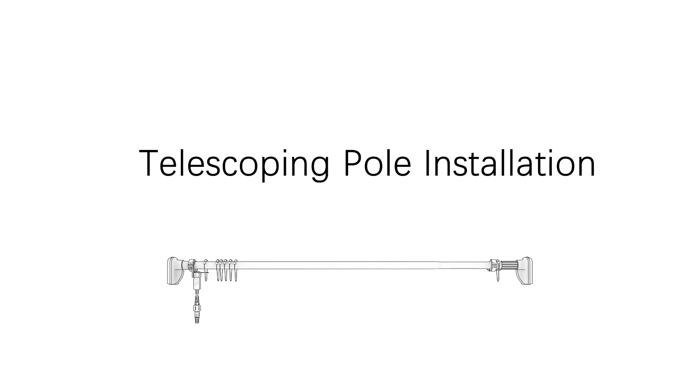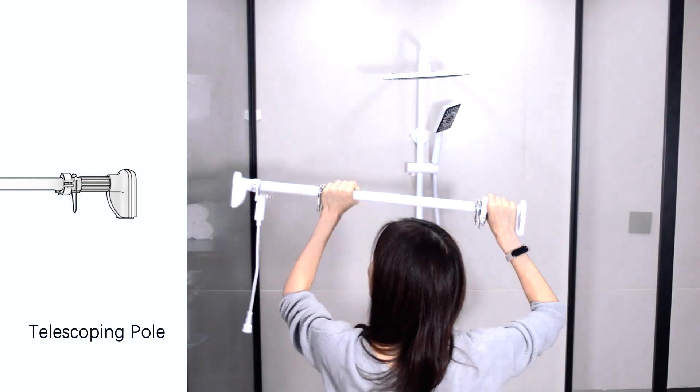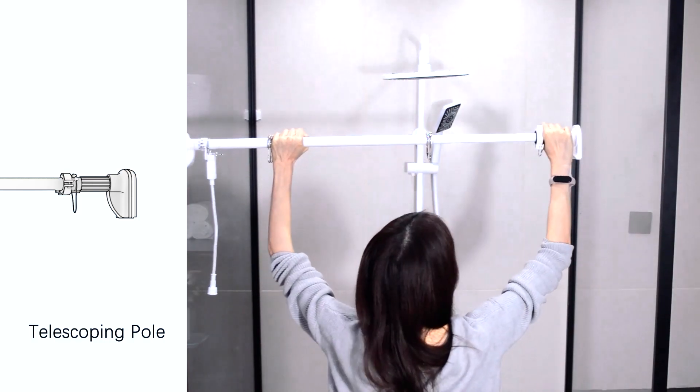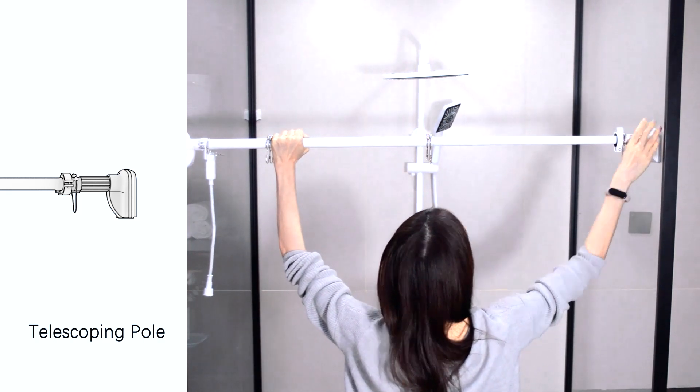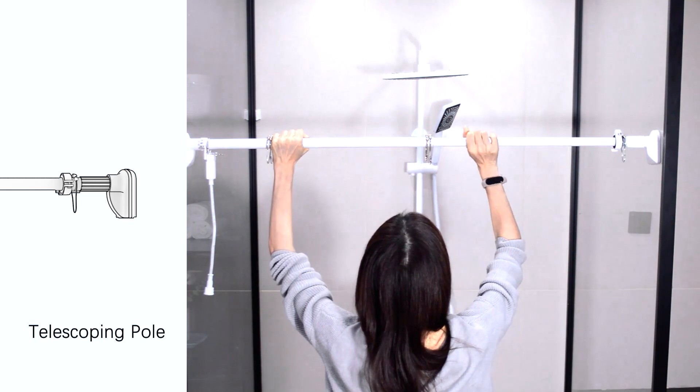Telescoping Pole Installation. Pull the telescoping pole to the walls. Place hands in the middle of the thin pole and thick pole. Twist and tighten both poles in the reverse direction at the same time.